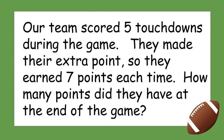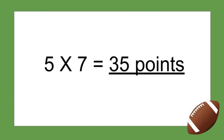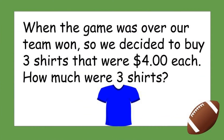Our team scored five touchdowns during the game and made their extra point, so they earned seven points each time. How many points did they have at the end of the game? Pause the video and solve the problem. Five represents the number of touchdowns and seven represents how many points they got each time. Five times seven — five touchdowns times seven points — equals a total of 35 points. Go team!